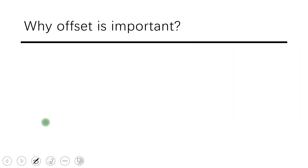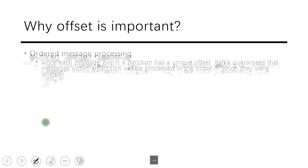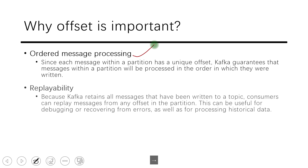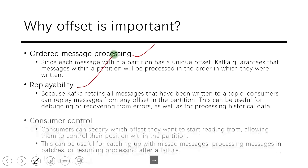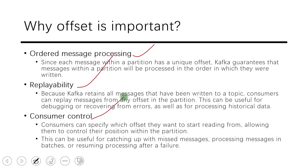Why is offset important? Offset enables ordered message processing, replayability, and consumer control — giving consumers the flexibility to listen to messages from any specific point in the Kafka ecosystem. So that's all about this video. We have covered broker, topic, partition, and offset. In the next video, let's see about the producer, consumer, and the Zookeeper part.